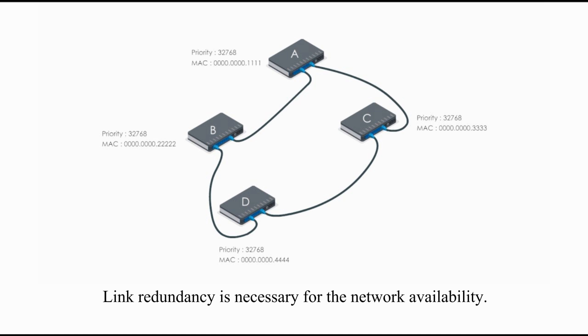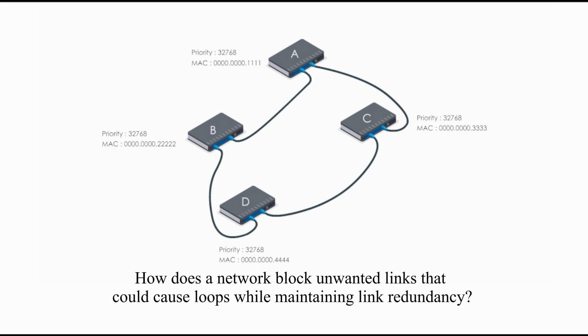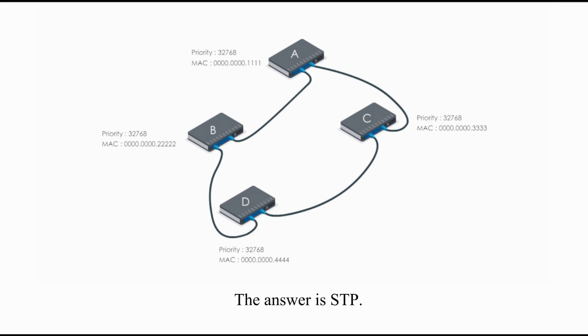Link redundancy is necessary for the network availability. However, redundant links will create layer-2 loops. How does a network block unwanted links that could cause loops while maintaining link redundancy? The answer is STP.